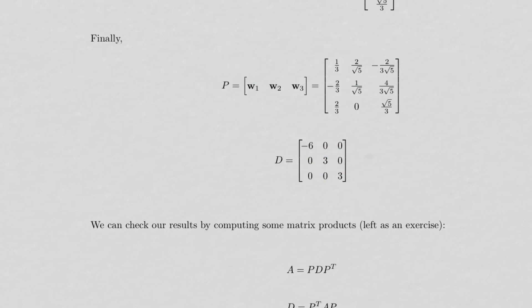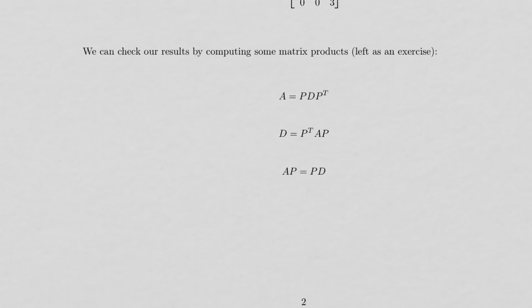And P and D orthogonally diagonalize A, since P is an orthogonal matrix. You can check your results a few different ways here. You can compute PDP transpose, and that's going to be equal to A. You can compute P transpose AP, that's going to be equal to D.